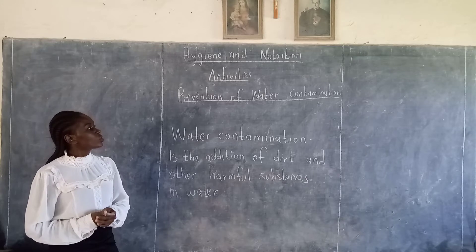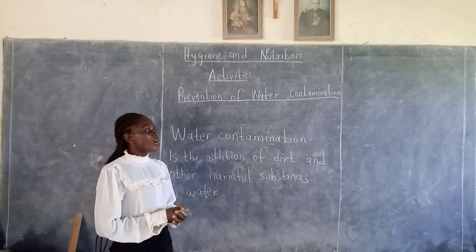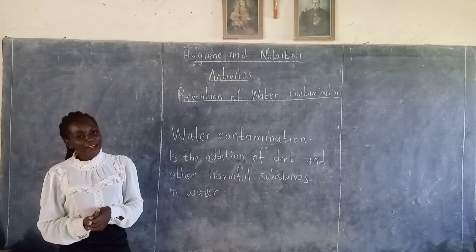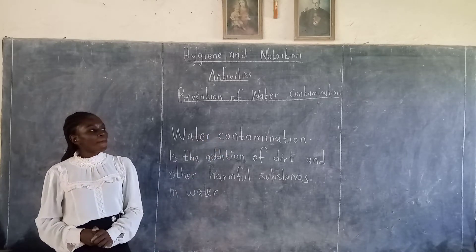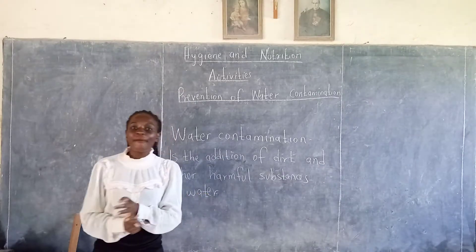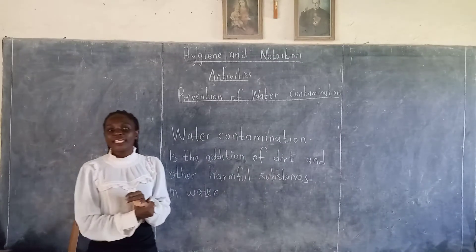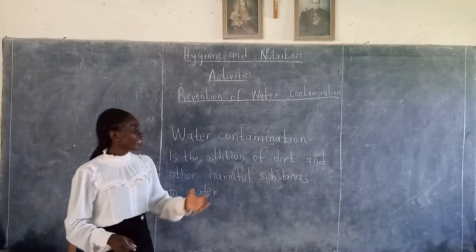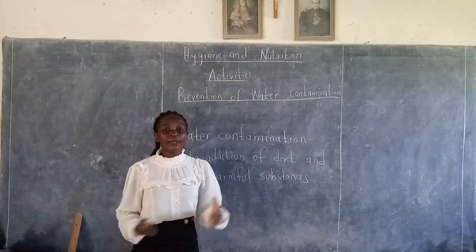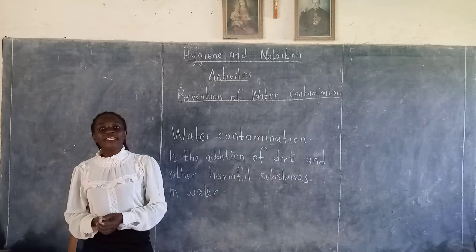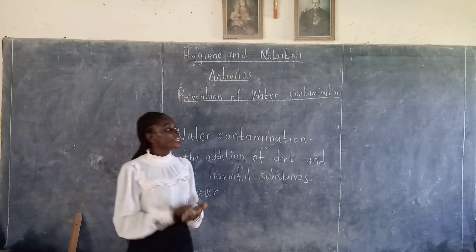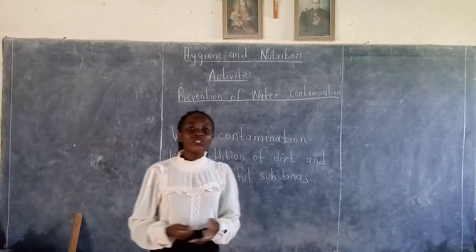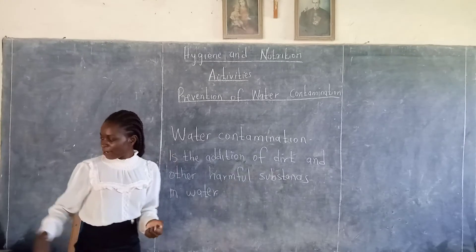We also discussed ways in which we can contaminate water, and we mentioned many ways. Like I read you a story about how people were contaminating their water — someone bathing in the water, someone throwing rubbish in the water. We also said contaminated water is harmful to our health. Contaminated water is dirty water, and when you take dirty water you can become sick.